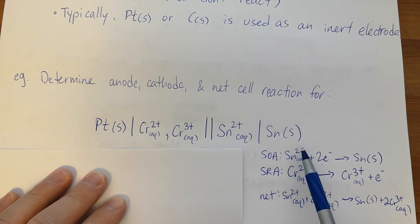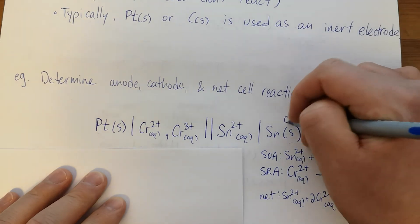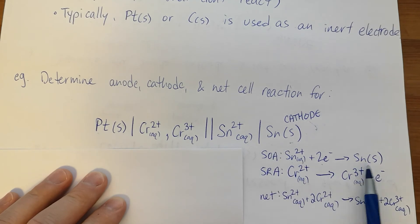The cathode has to be the solid conductor, which in this case will be tin. Notice tin doesn't react.